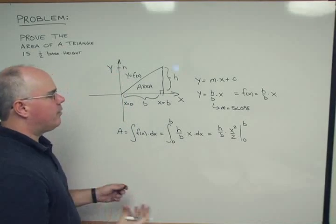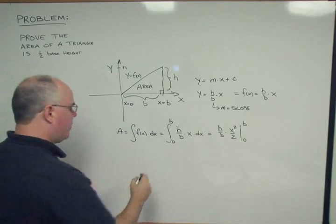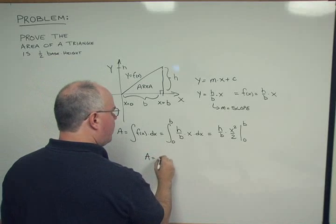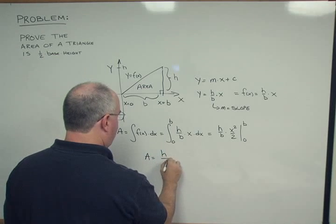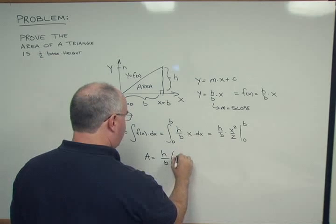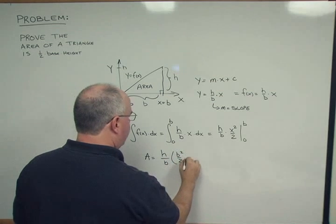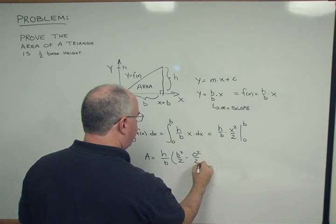Now the constant term h over b, those are constants, they can be pulled out. We see that a equals h over b times b squared over 2 minus 0 squared over 2.